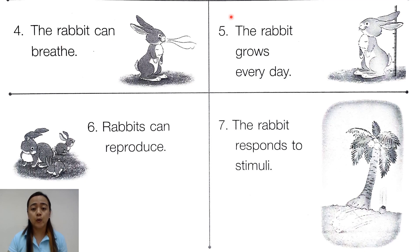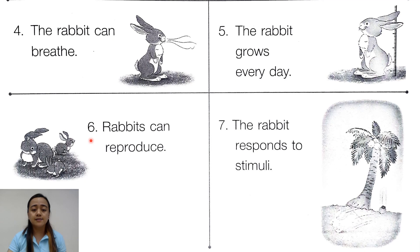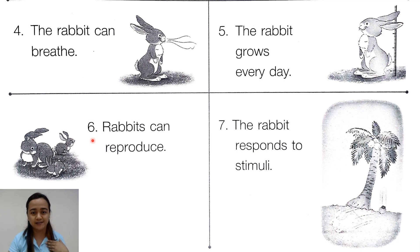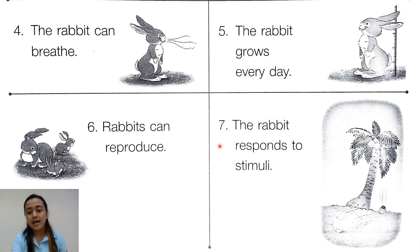Fifth, the rabbit grows every day, so like us, we can get bigger or taller. Sixth, the rabbits can reproduce — reproduce means having children. So like us humans, we can reproduce children. Seven, the rabbit responds to stimuli. Response to stimuli means changes in the environment such as light, sound, temperature, and touch.